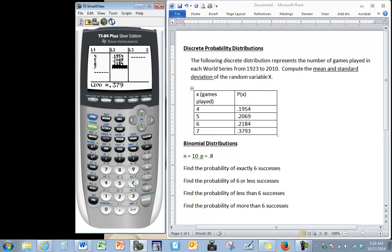Once we have our probabilities in we want to go back to the main screen. So in order to quit we press second and mode. From the main screen, stat, we move our cursor over to calculate.